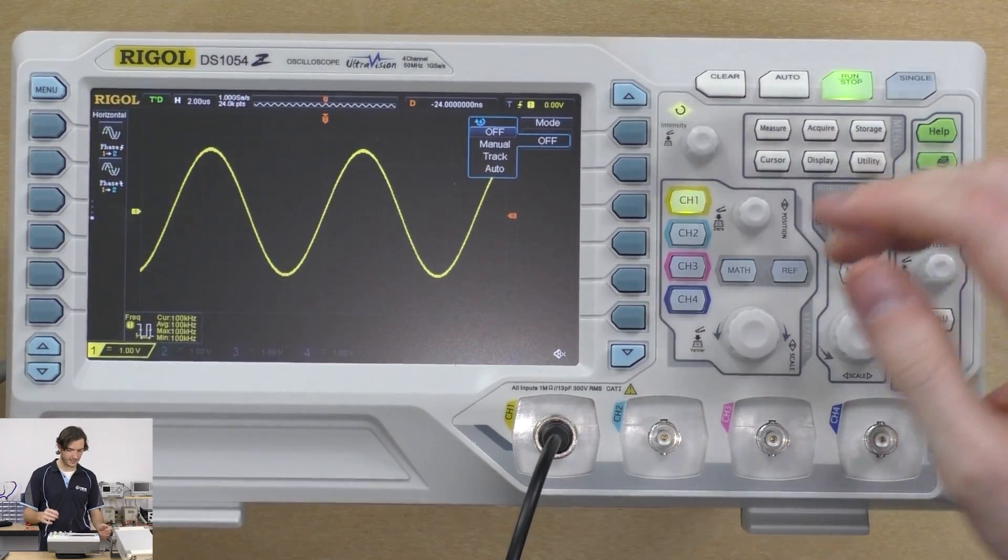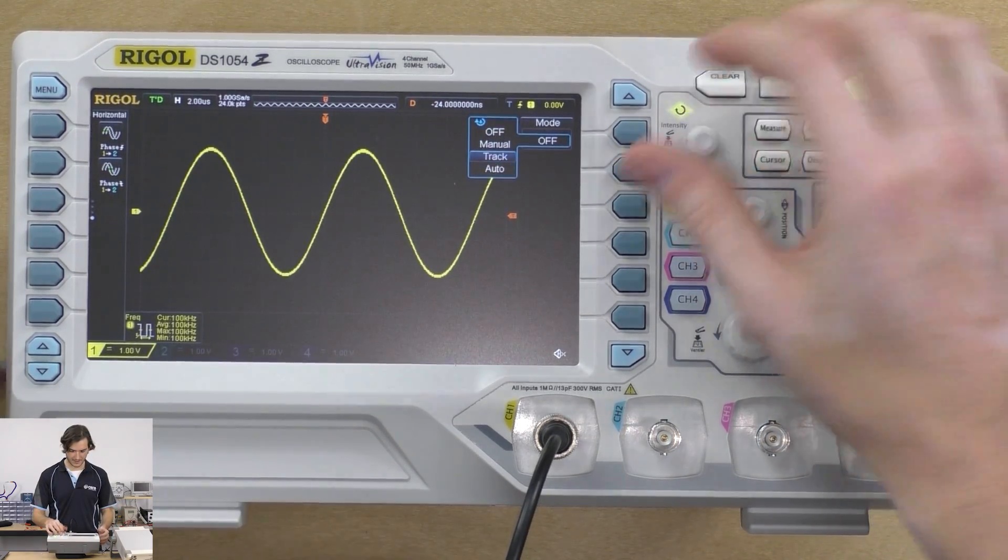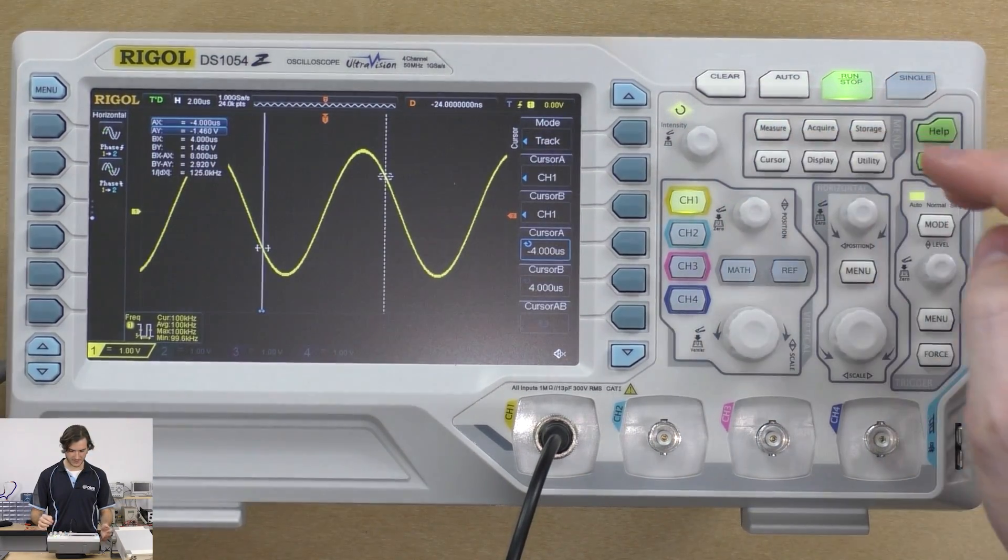I currently have a 100 kilohertz signal on the scope and I'll just go into manual cursor mode and we'll see what's happening there.